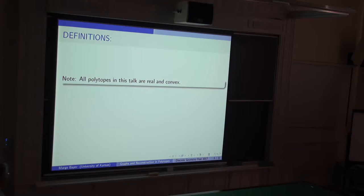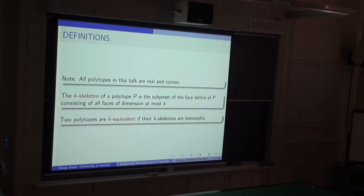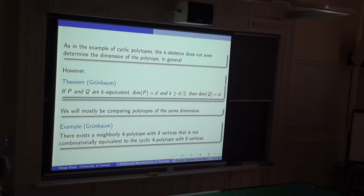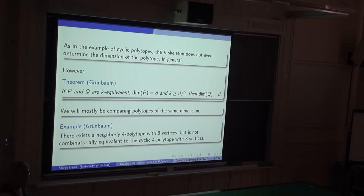Some definitions: all of these polytopes in the talk are real and convex. The k-skeleton is a combinatorial list — specifically the sub-poset of the face lattice of P consisting of all faces of dimension at most k. We say two polytopes are k-equivalent if their k-skeletons are isomorphic. As in the cyclic polytope example, a k-skeleton does not even determine the dimension of the polytope in general. But if k is a little larger — if P and Q are k-equivalent and k ≥ d/2 — then Q must also have dimension d.